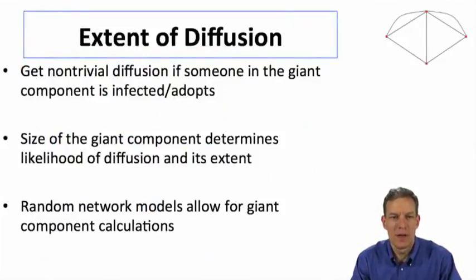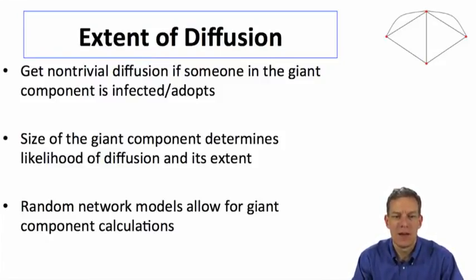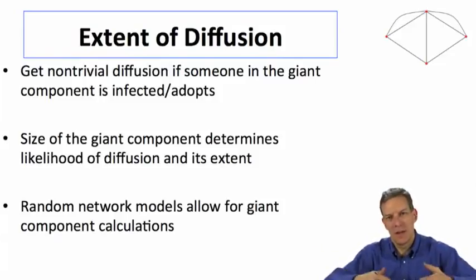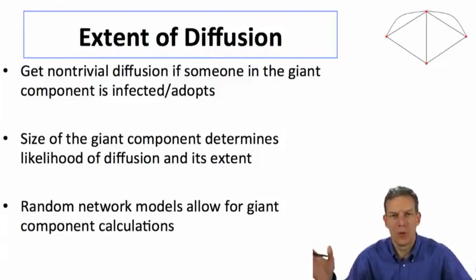We'll think about getting non-trivial diffusion if somebody in the giant component is infected or adopts, so I'll use the word infected, but it could be adopting a new technology and so forth. The size of the giant component is going to determine both likelihood and its extent. And random network models are going to allow for giant component calculations.